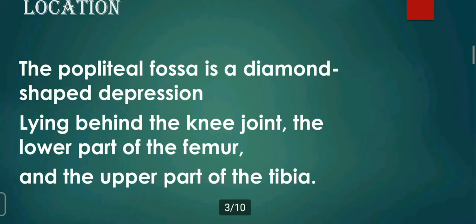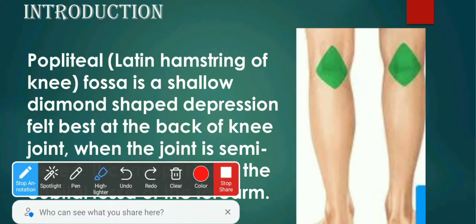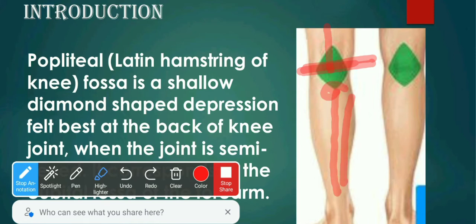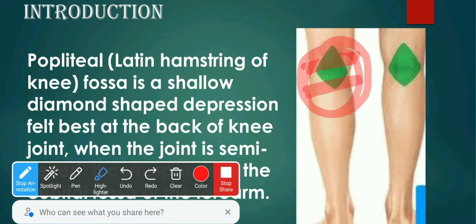Moving forward with the location — where is it situated? As we already know, it lies behind the knee joint, and the lower part of the femur. Femur is our thigh bone. And the upper part of the tibia and fibula. So the position of the popliteal fossa is at the lower part of the femur, upper part of the tibia, and back of the knee joint.